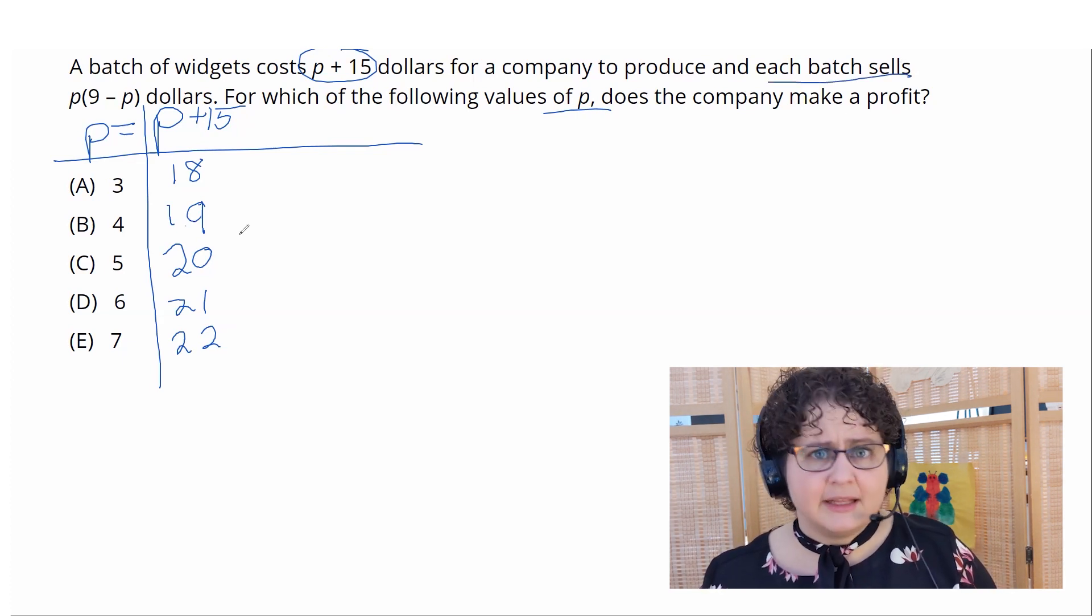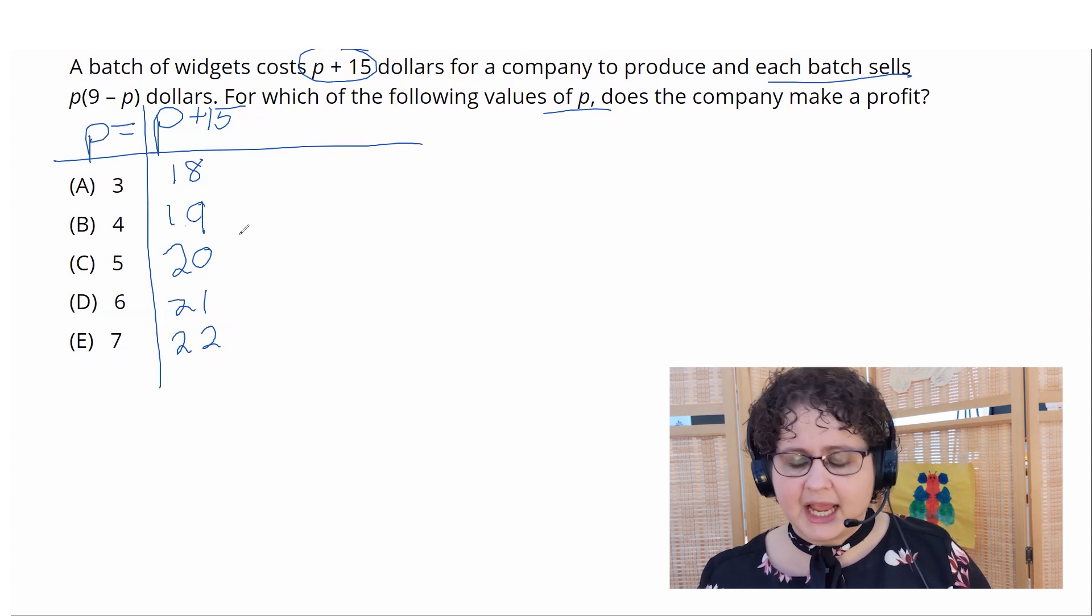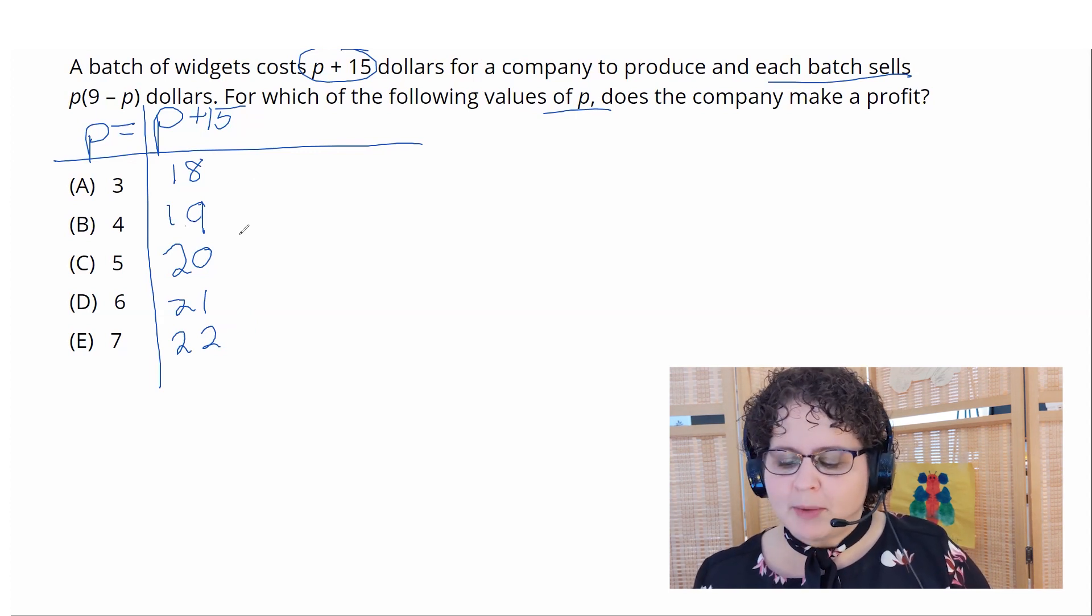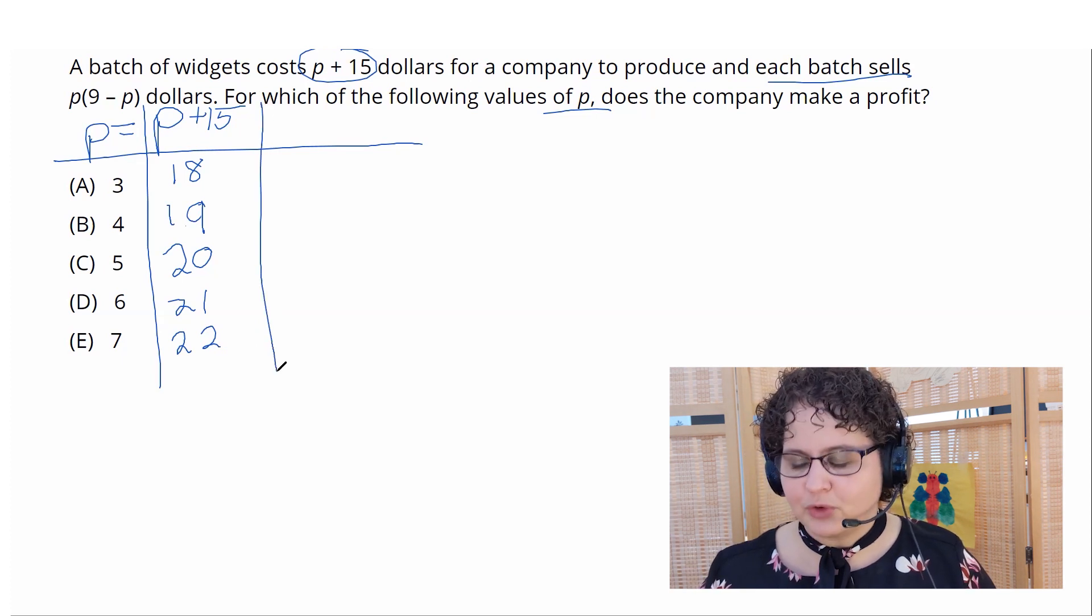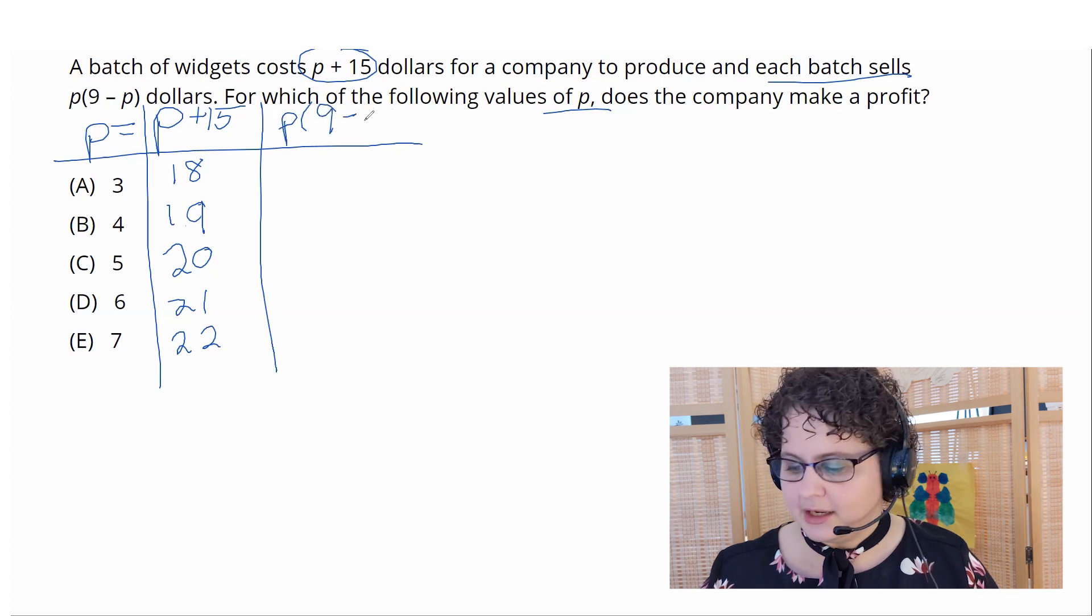Now, this is a slightly more complex expression in that I have p showing up twice. So I'm not going to try to do all of that in one step in my mind. Instead, I'm going to write this out as p and separately 9 minus p.